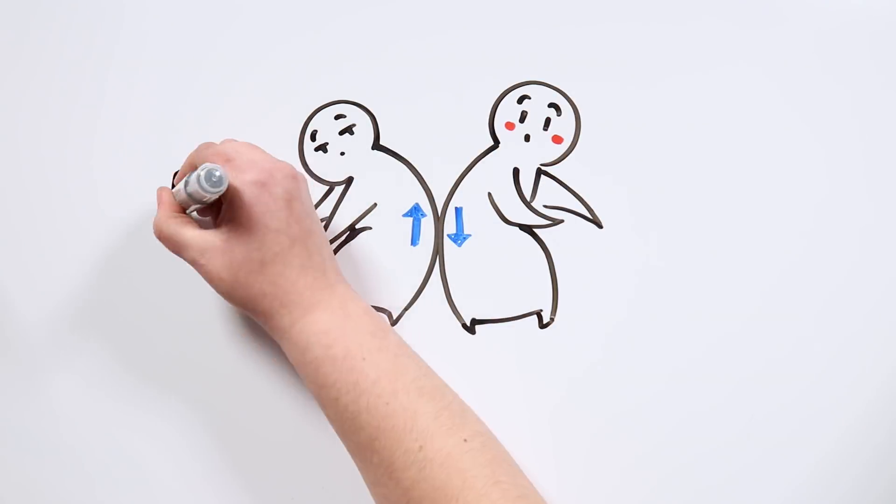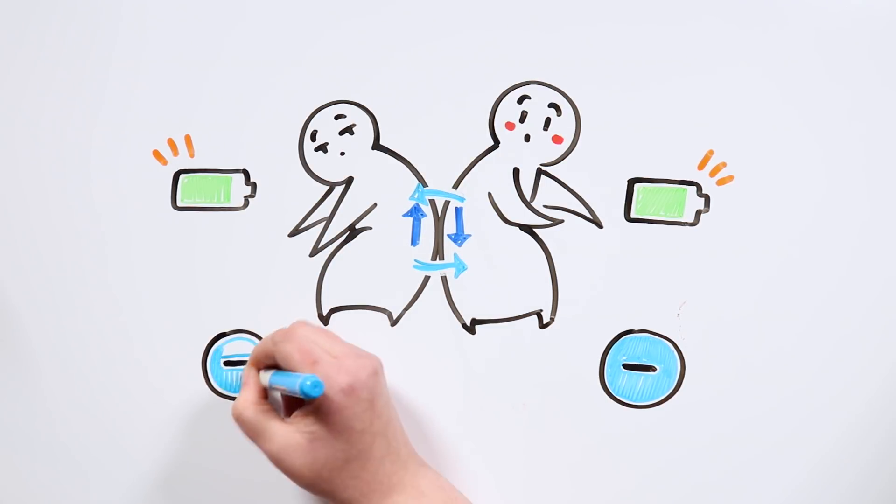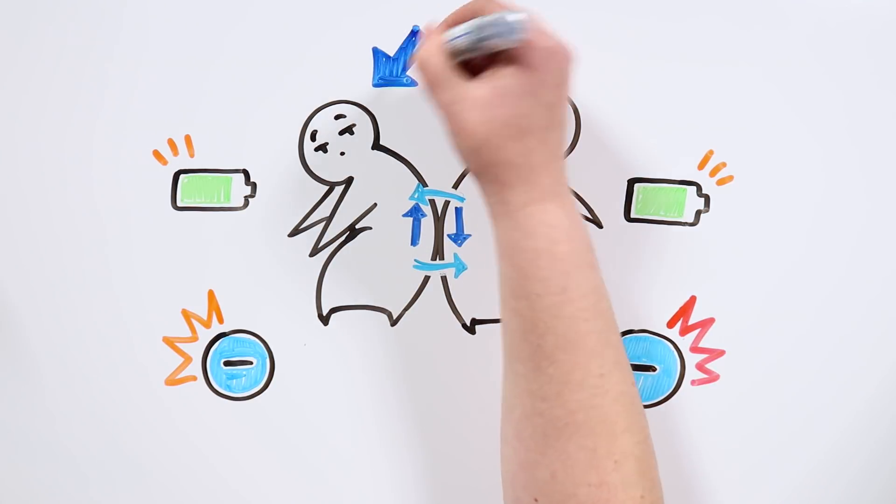When we rub two things together, what we are doing is charging them with energy. Electrons are the only particles that can move from one object to another, so that with friction some objects lose them and others gain them, depending on the type of material they are made of.